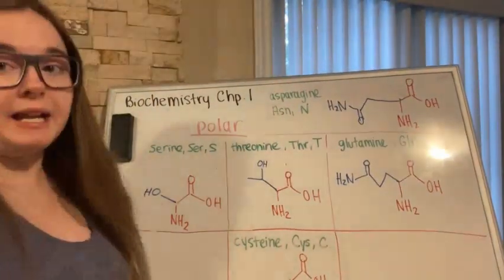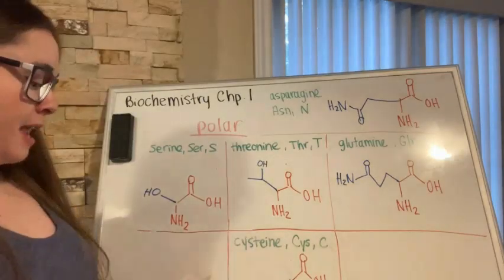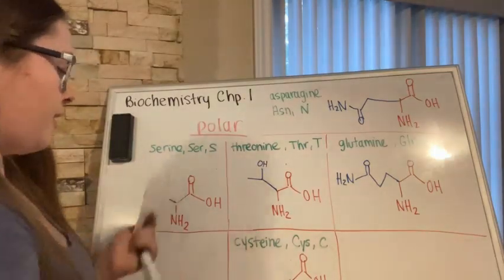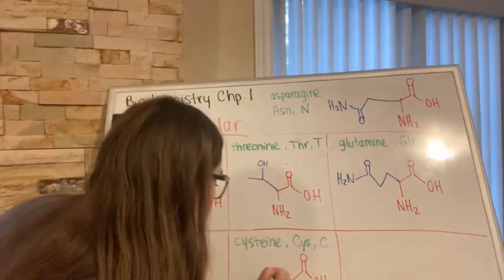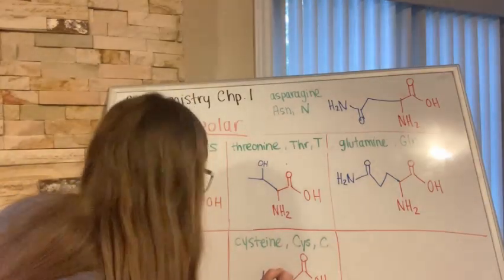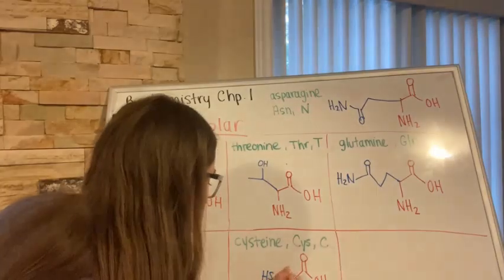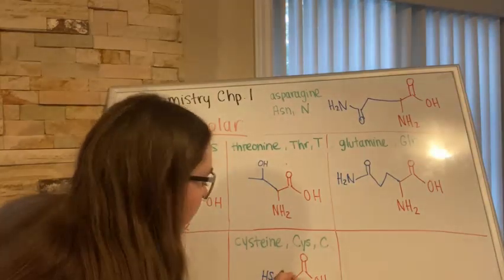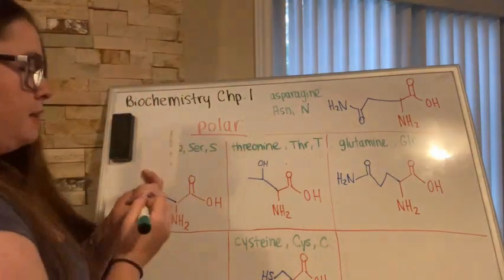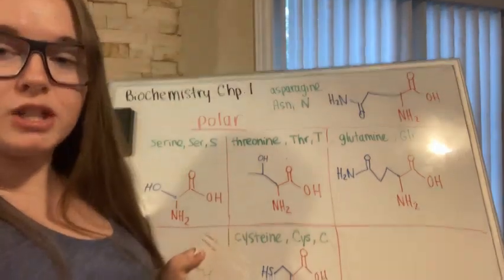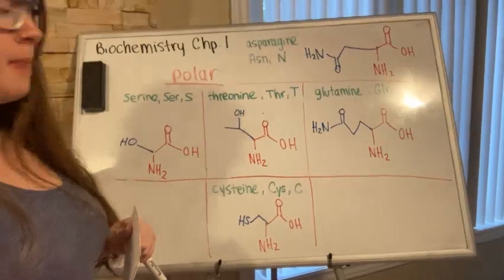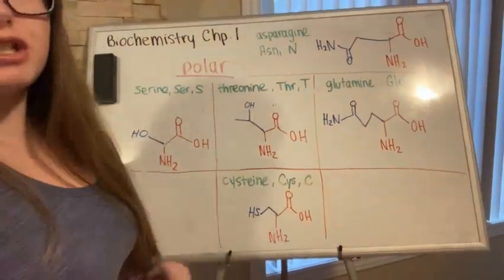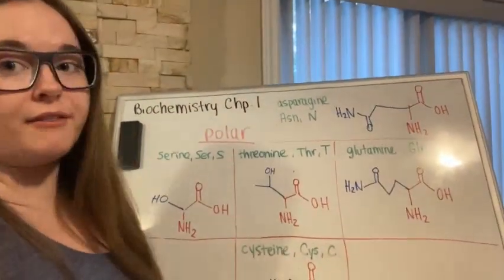Our last polar non-aromatic amino acid is cysteine, and cysteine is also a special one. It has an HS group attached to a carbon, which is attached to the alpha carbon.